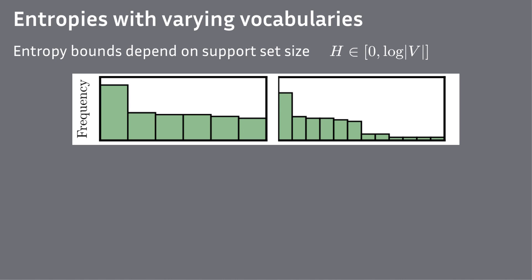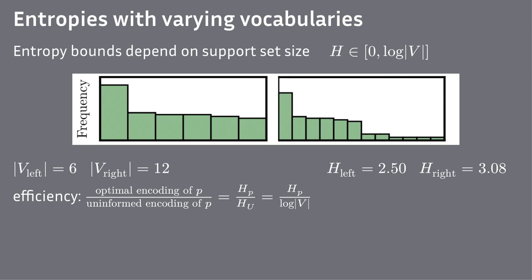There is one problem with maximizing entropy. Here we have two tokenizations and their unigram distributions. The entropy of the right one is higher, but that is contrary to our intuition, because that tokenization has lots of super low frequency units.